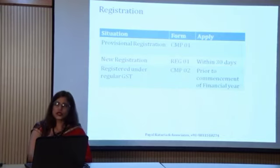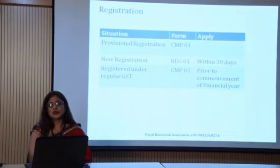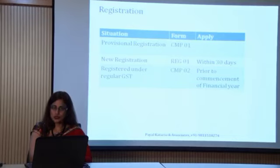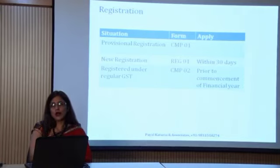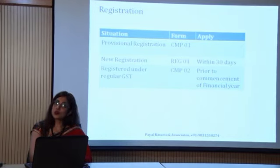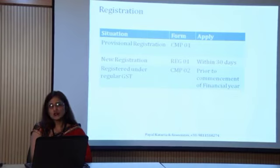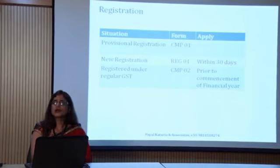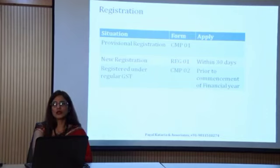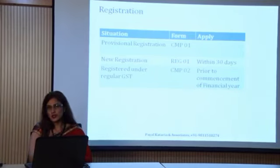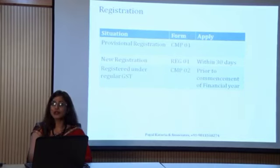The second situation is new registration. If you are a new registrant and want to opt the composition scheme, within 30 days of your obligation to get registered you will file form REG01 — the same form used for the regular scheme — but there is a separate column in which you mention that you want to opt the composition scheme. Through this you will get registration as a composite dealer.